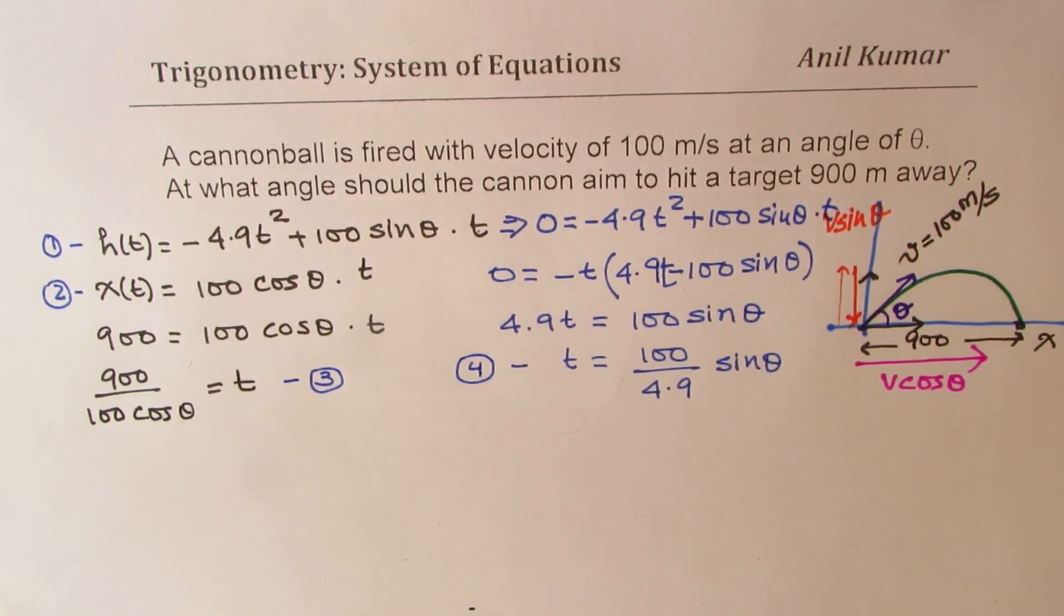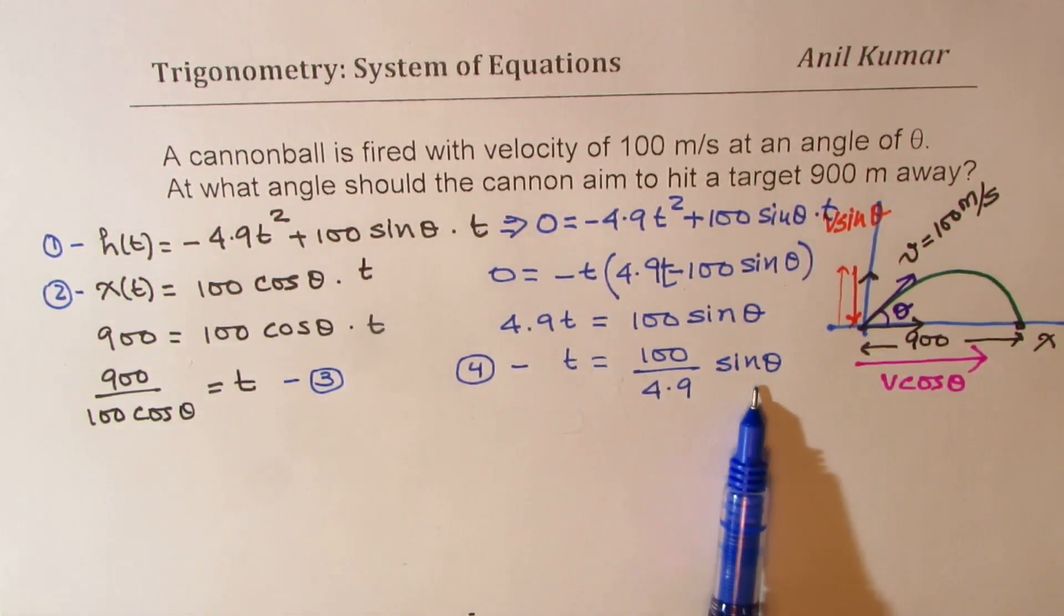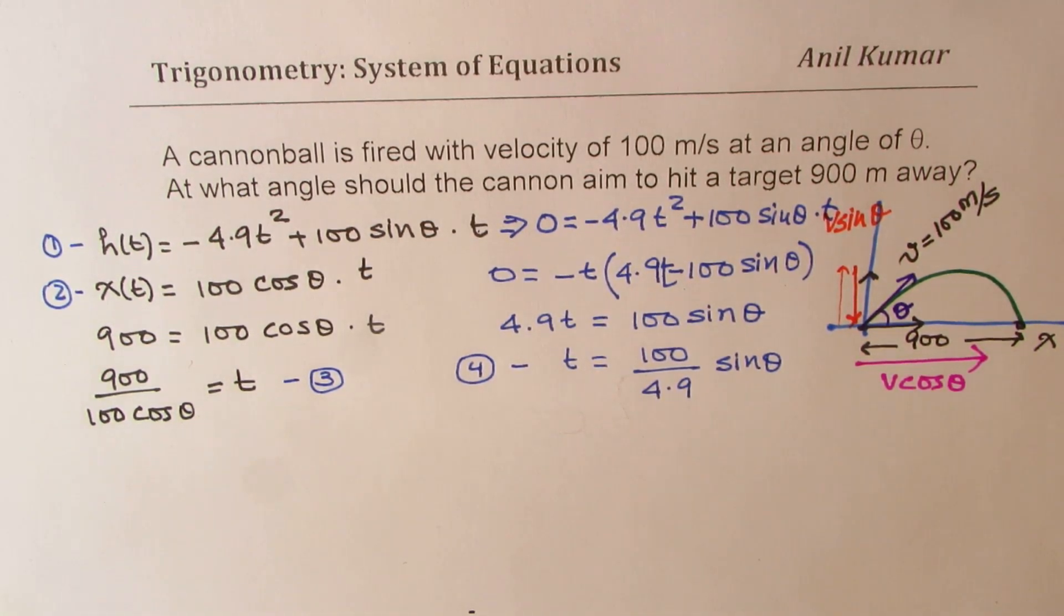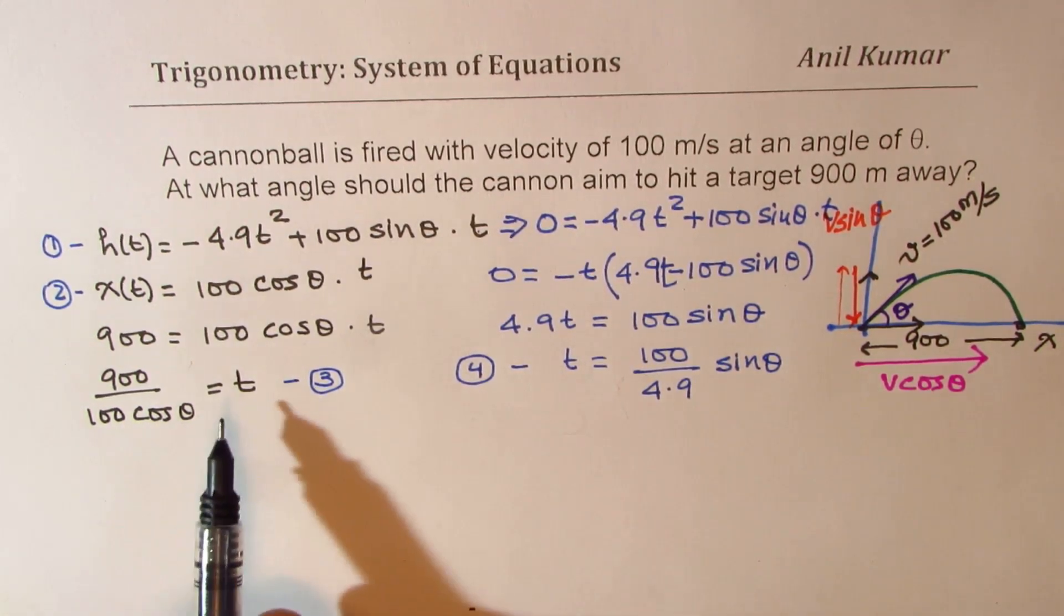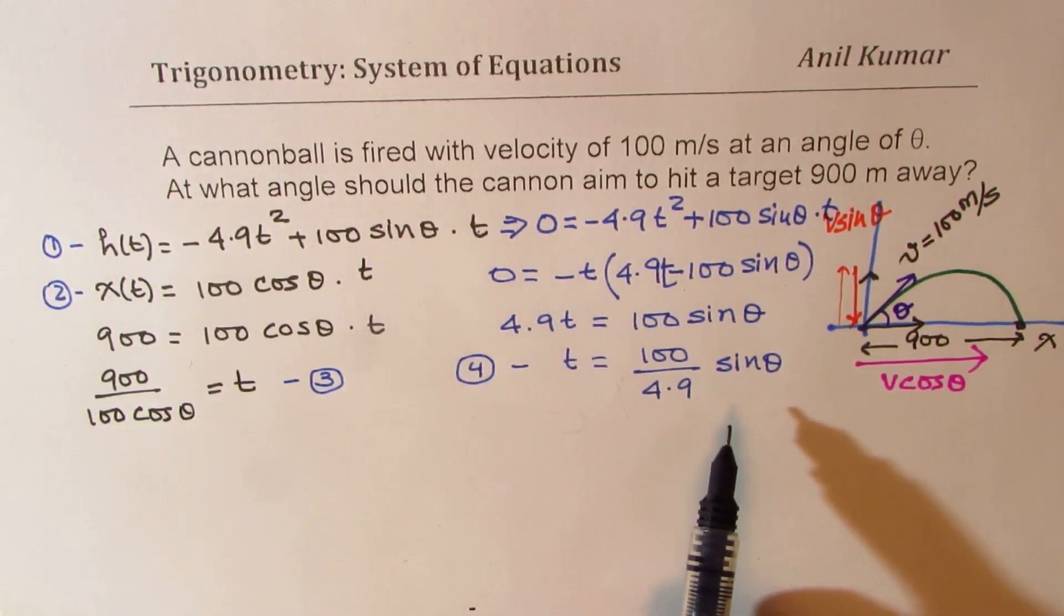Now, both are the values of t. They should be equal, right? So we need to solve this equation. Now, in this equation, we have only theta as an unknown. So that should help us to find the answer, right? So at this stage, you can actually pause the video, answer and then look into my suggestions.